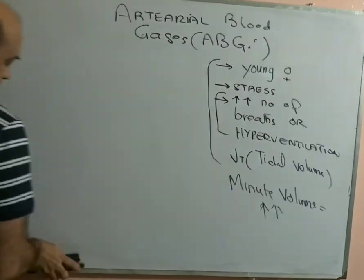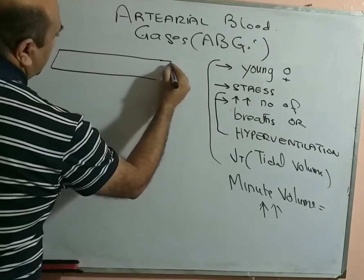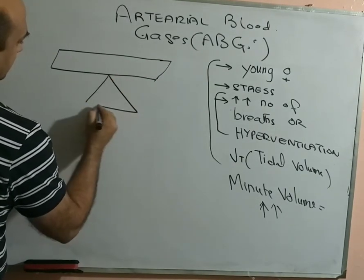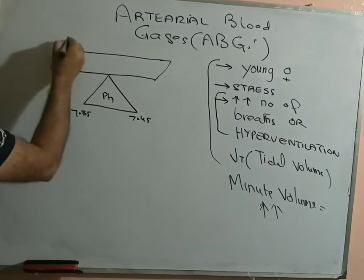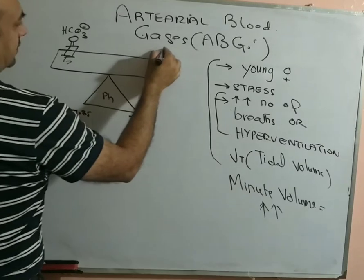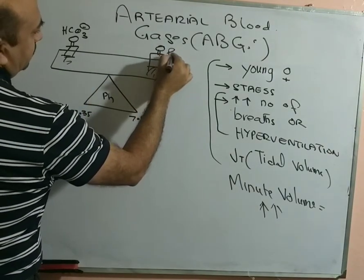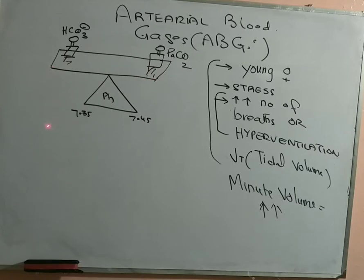Let's go back to the example of the seesaw. There are two kids playing sitting on a board. Their balance is 7.35 to 7.45 — this balance is known as pH. The kid sitting on one side is bicarbonate, and the kid sitting on the other side is PaCO2. These two kids play the seesaw in such a way that if this balance — the pH between 7.35 to 7.45 — is disturbed by one of them, the other will try to compensate for it.